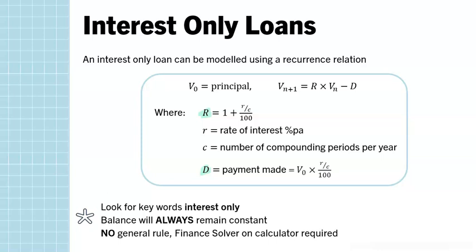Know that the balance will always remain constant if it is this type. Often a question will simply ask what is the balance of the loan after 10 years or after 50 repayments — it can be a trick question if you're not sure what you're dealing with. Remember there is no general rule for combined models, so we can use Finance Solver.